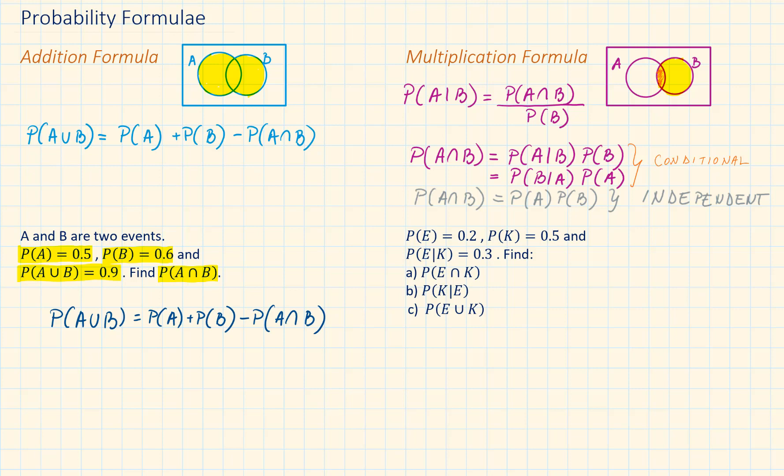Replacing the values, we will have 0.9 is equal to 0.5 plus 0.6 minus their intersection. Rearranging this, we will have the probability of A intersection B equals to 1.1 minus 0.9 and that is 0.3.